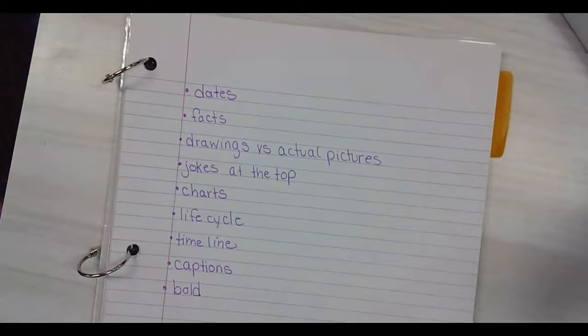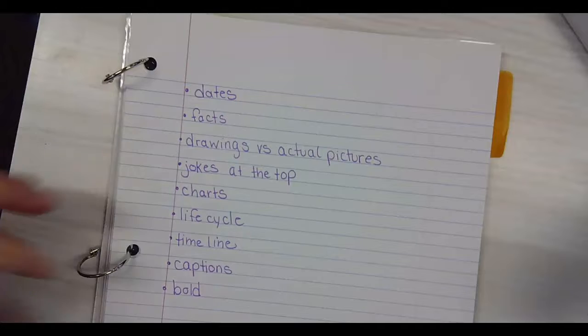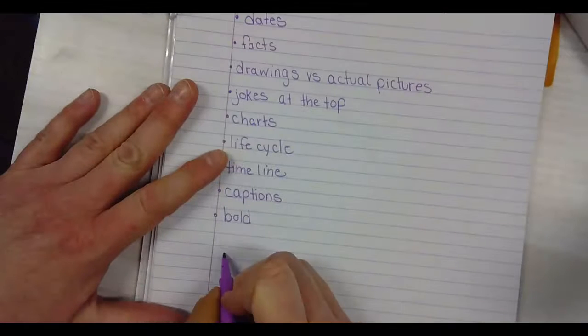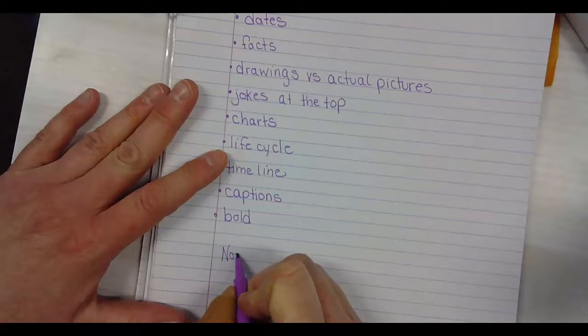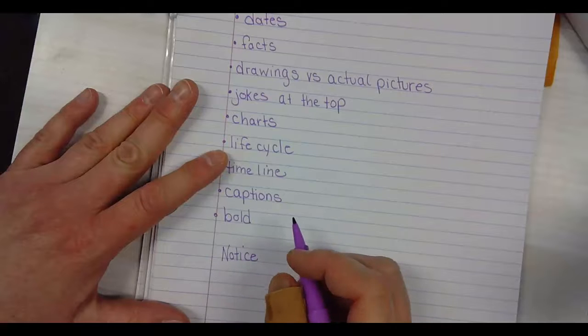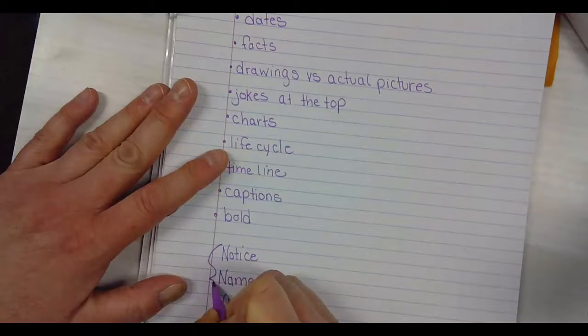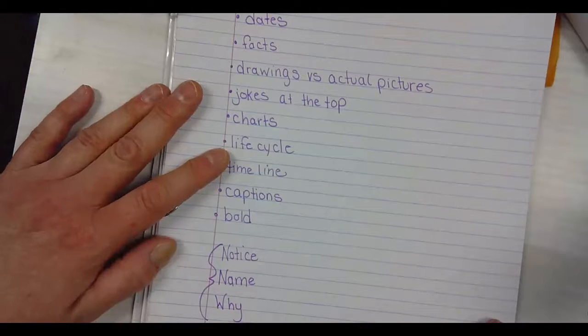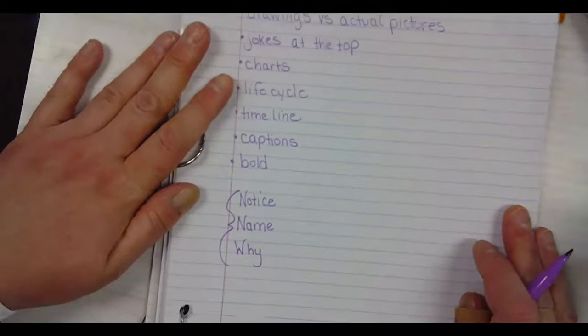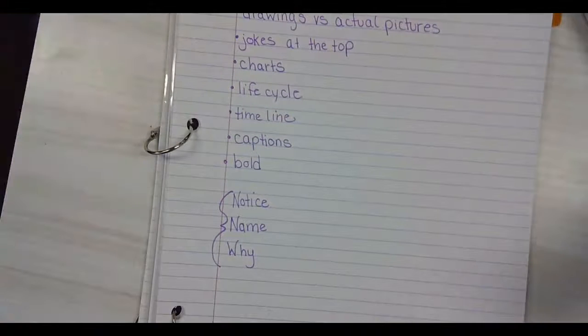When we're doing information immersion, we also look at notice, like what do you notice? And then you need to name it. And then you need to tell why. This is the things that we did when we were doing writerly eyes. Notice, name, and then why.